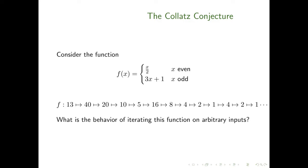We're looking at the Collatz function here, a function from natural numbers to natural numbers. It's a piecewise function where the pieces depend on the modular remainders of the input — in this case, remainders mod 2 — and each of the pieces is a linear polynomial whose coefficients are rational numbers.